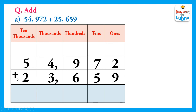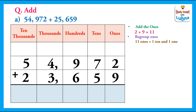First of all, we will add the ones. Two plus nine equals eleven. So we regroup the ones: eleven ones equals one ten and one one. So we write one in the ones column and put one carry on the tens column.